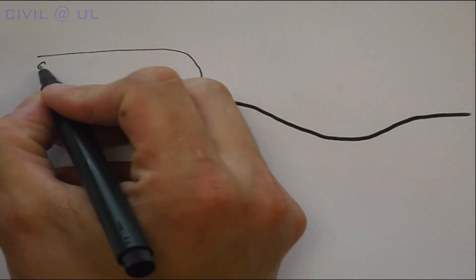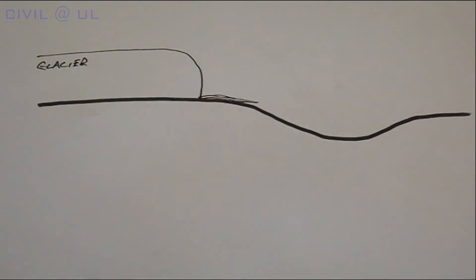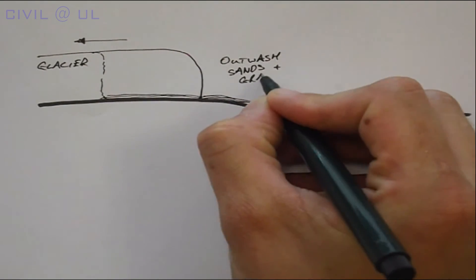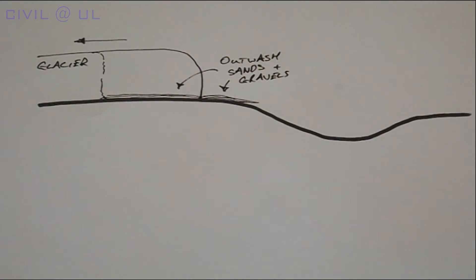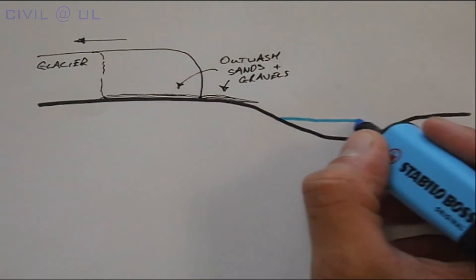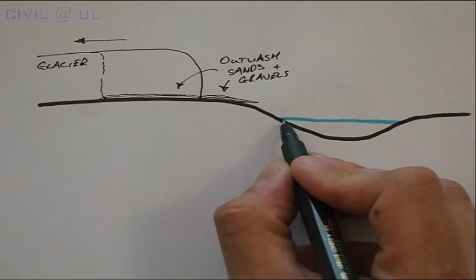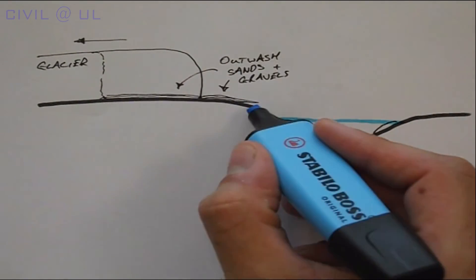As glacial retreat takes place, the remaining soils are released as loose outwash sands and gravels which are deposited on top of the over-consolidated materials. These water flows end up creating rivers that run through valleys and these in turn are a source of further erosion.